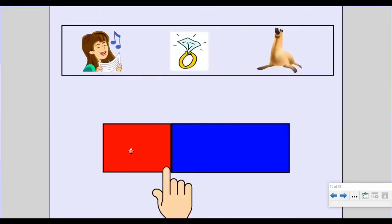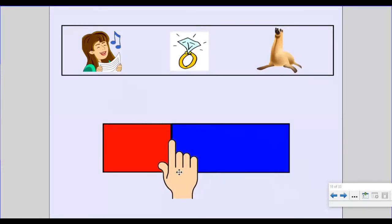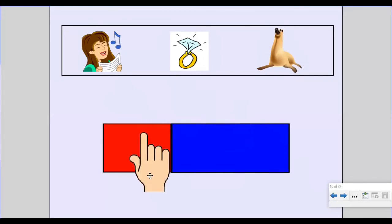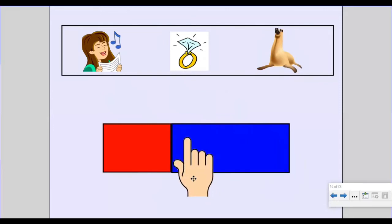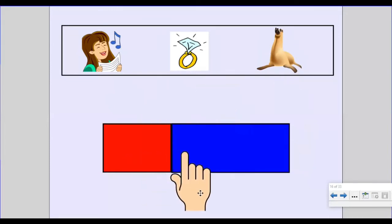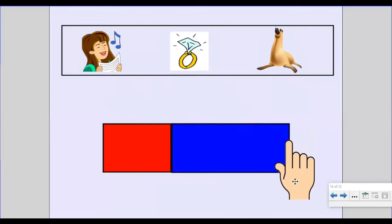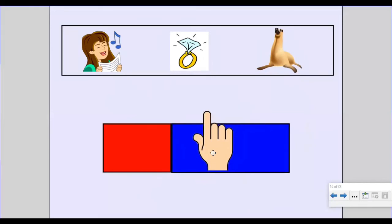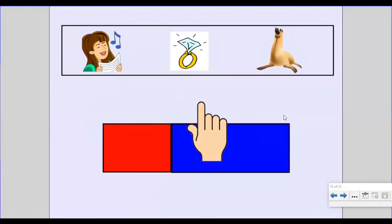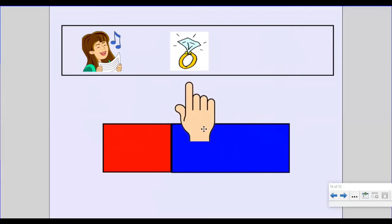Nice work. Say the word 'sing.' Break it: S, ing. Sing has the 'ing' chunk. Say the word 'ring.' Break it: R, ing. Ring has the 'ing' chunk. Say the word 'seal.' Break it: S, eal. Seal ends with the 'eal' chunk. Which word does not belong? Which word does not rhyme? Sing, ring, seal. Did you guess seal? You got it. Seal does not rhyme. Sing and ring are rhyming words — they both end with 'ing.'